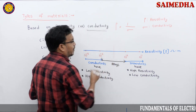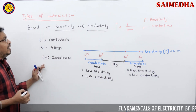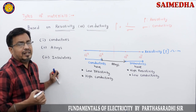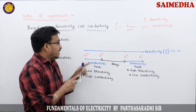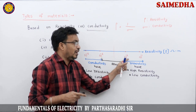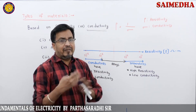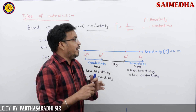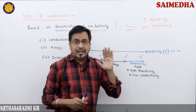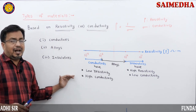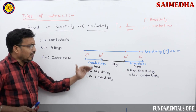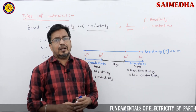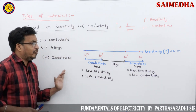This is a very important term. Materials are classified based on resistivity or conductivity. Conductors have low resistivity or high conductivity. Insulators have high resistivity or low conductivity. This is the classification of materials.